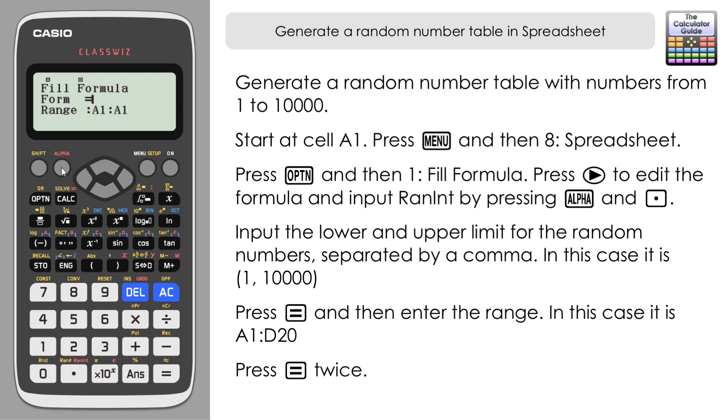It's Alpha and random integer and then I'm going to input my limits to what I want my smallest and largest random number to be. I'm going to go from 1 to 10,000. Remember it's Shift and right bracket for a comma. Then I want to input my range, I'm going to keep the range at A1 to D20. Press Equals and then Equals to confirm.